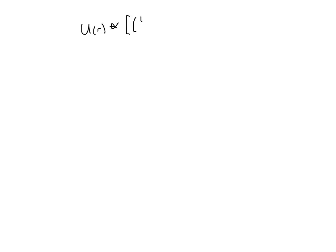The total interaction energy, u at r, is the sum of the repulsive interaction energy, which is proportional to one over r to the twelfth. That term is positive because repulsive energies raise the energy of the system. And the attractive interaction energy, one over r to the sixth, and that term is negative because attractive energies lower the energy of the system. In order to replace the proportionality with an equal sign, we need to know the proportionality constant between the potential energy and the distance dependence.